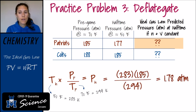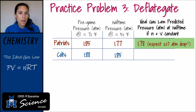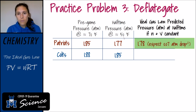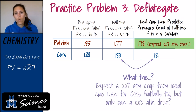When we plug in our numbers, we find that the ideal gas law predicts the Patriots' footballs, initially at 1.85 atm, would be about 1.78 atm at halftime — which is surprisingly close to what was actually measured at 1.77 atm. For the Colts' footballs, you would expect a pressure of 1.81 atm, which is actually 0.04 atm lower than what was actually measured.